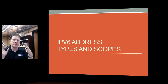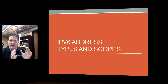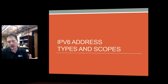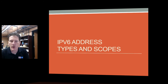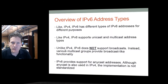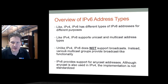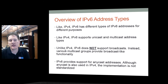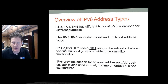Now that we understand what an IPv6 address looks like, let's look at address types and scopes. When you see something like 'fe80::1,' you now know what that means. IPv6 is just like IPv4 in that different types of addresses have different purposes. Like IPv4, IPv6 supports unicast and multicast address types.